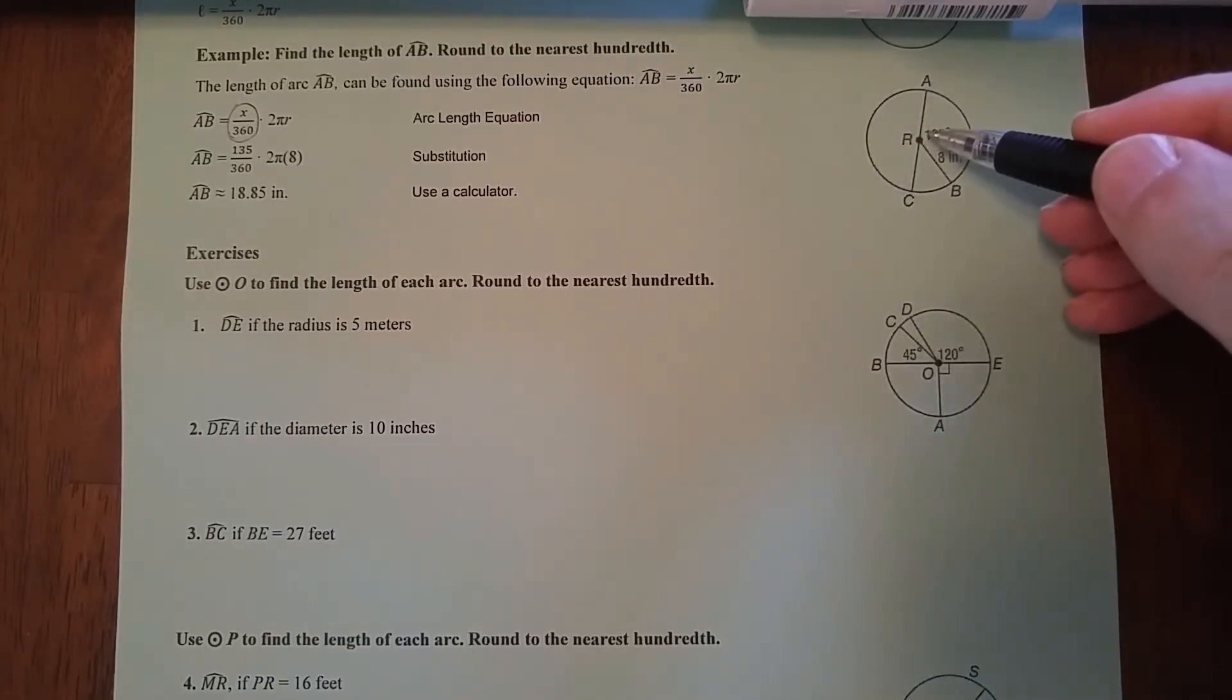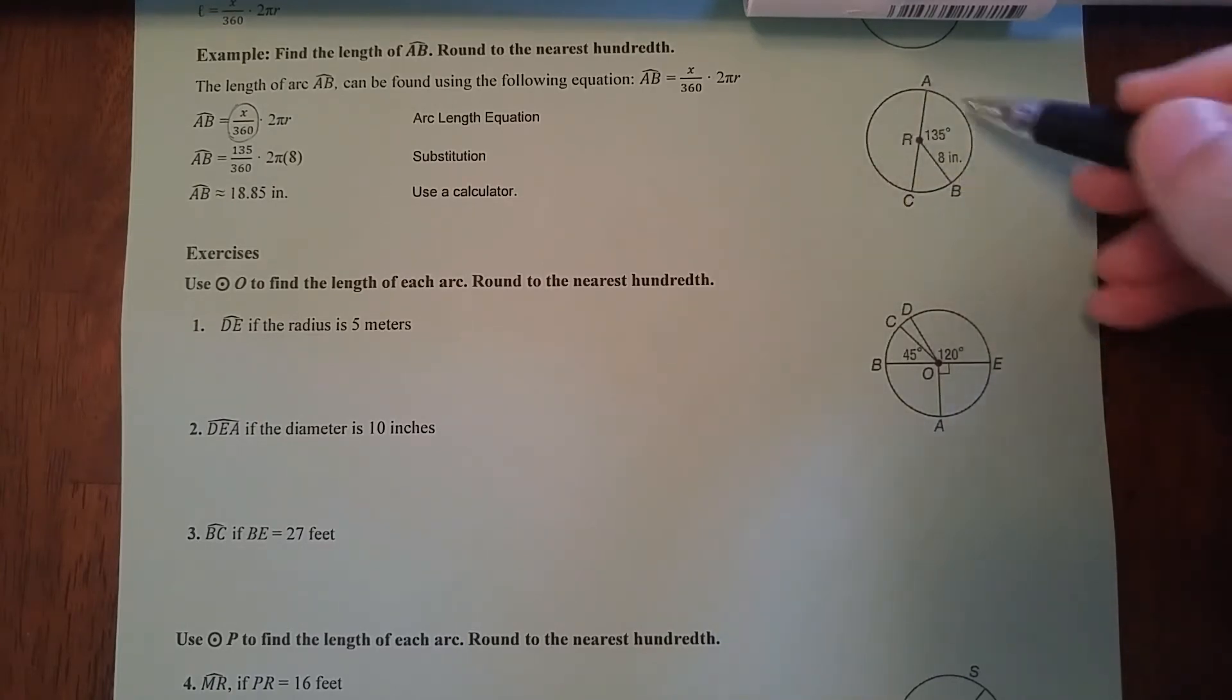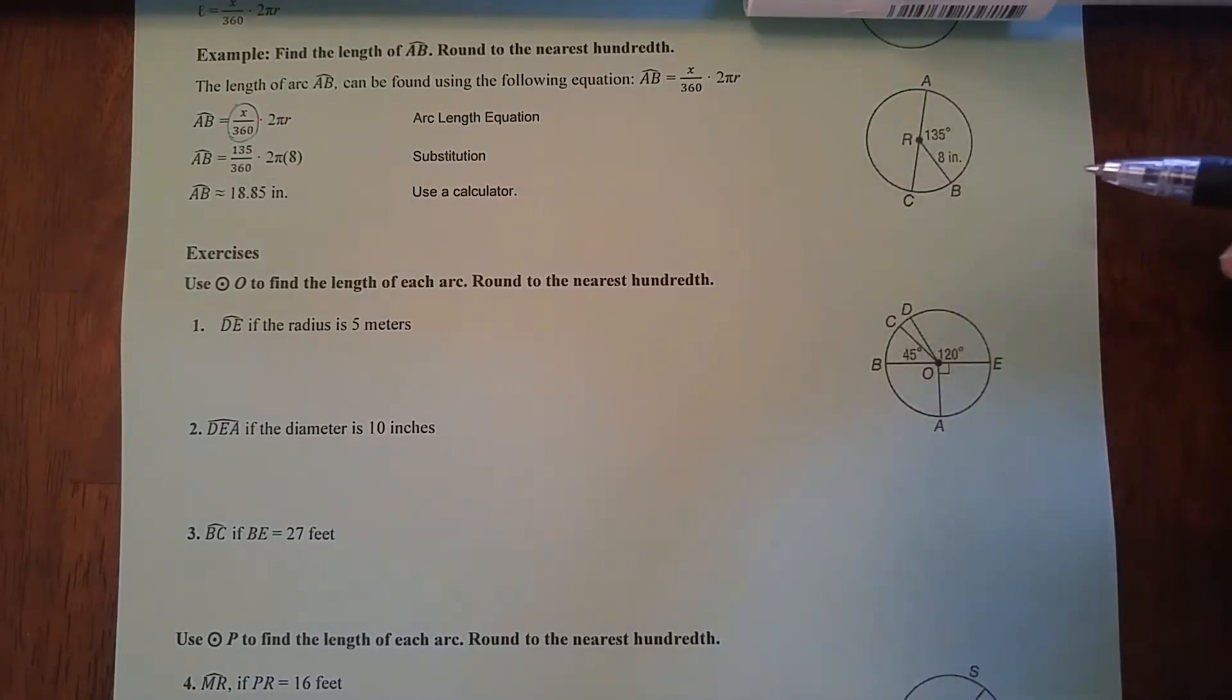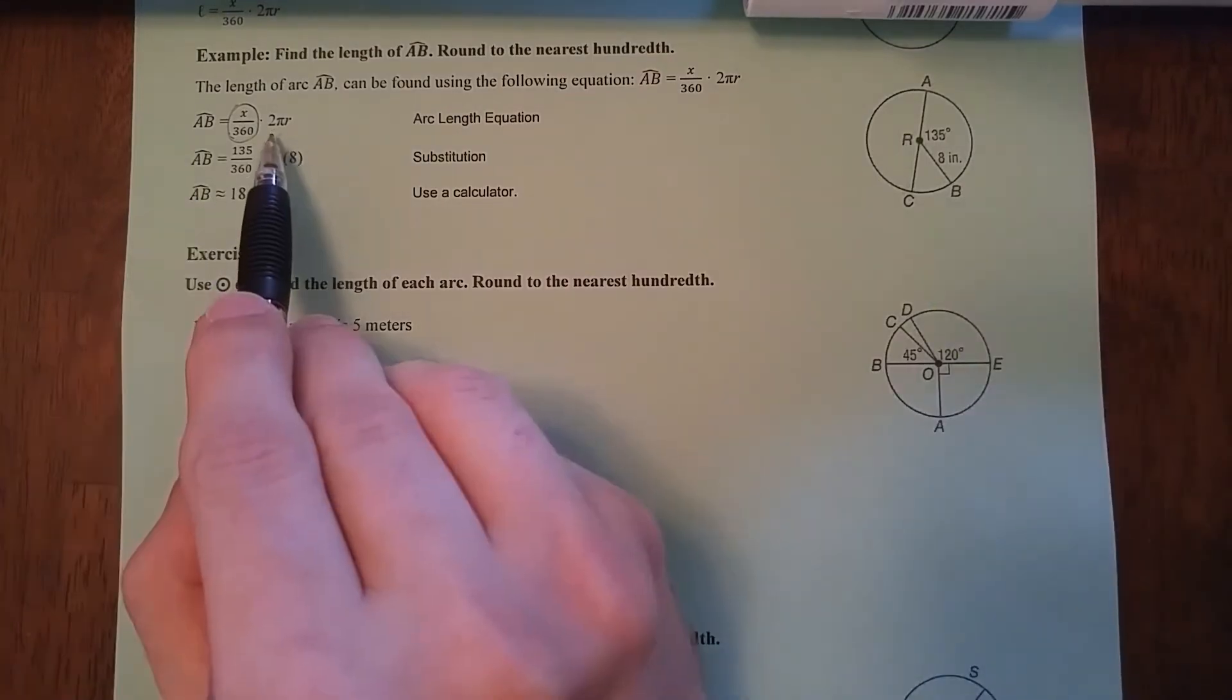For example, let's just pretend that this bit right here was 25% of the circle and the circumference was 100 meters. Well, if this is 25% and the whole thing's 100 meters, that would make this 25 meters. Those aren't the real numbers.